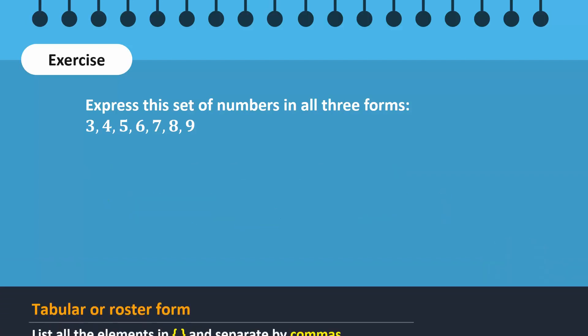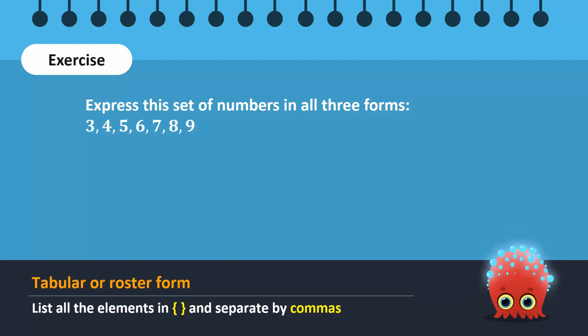In the tabular form, B equals 3, 4, 5, 6, 7, 8, and 9, all of which are separated by commas and listed between braces.